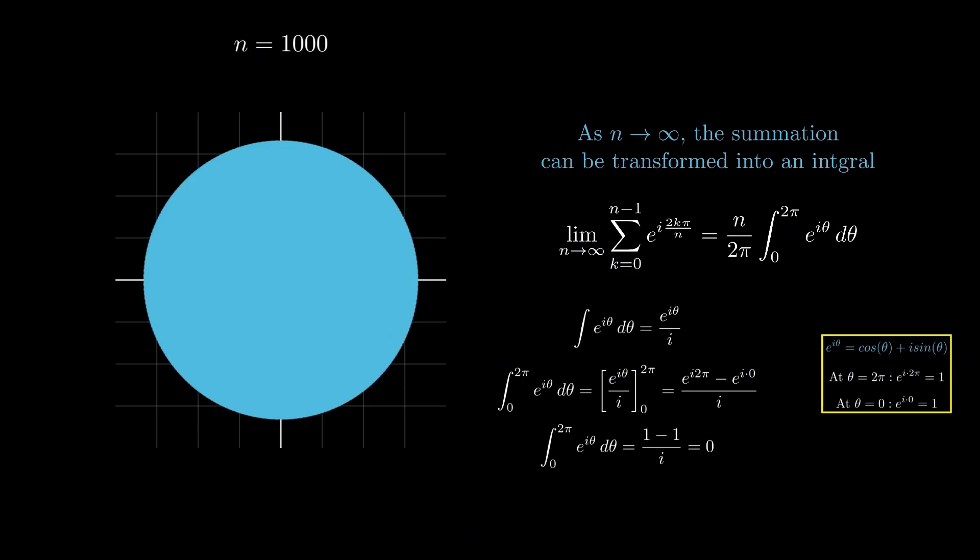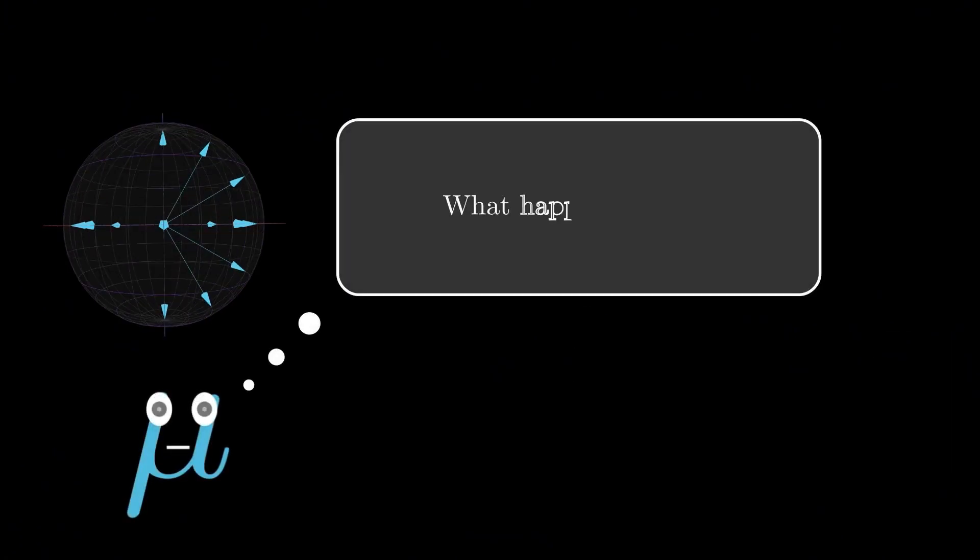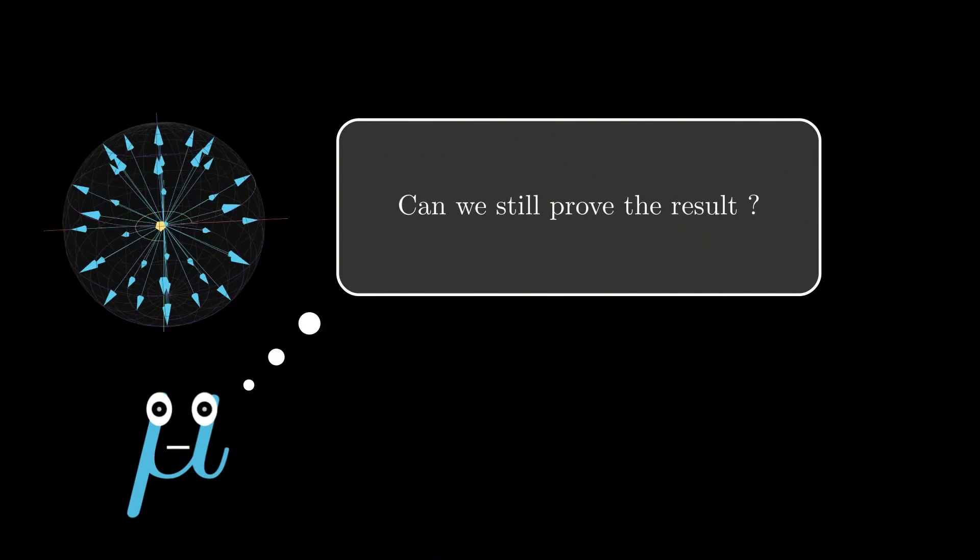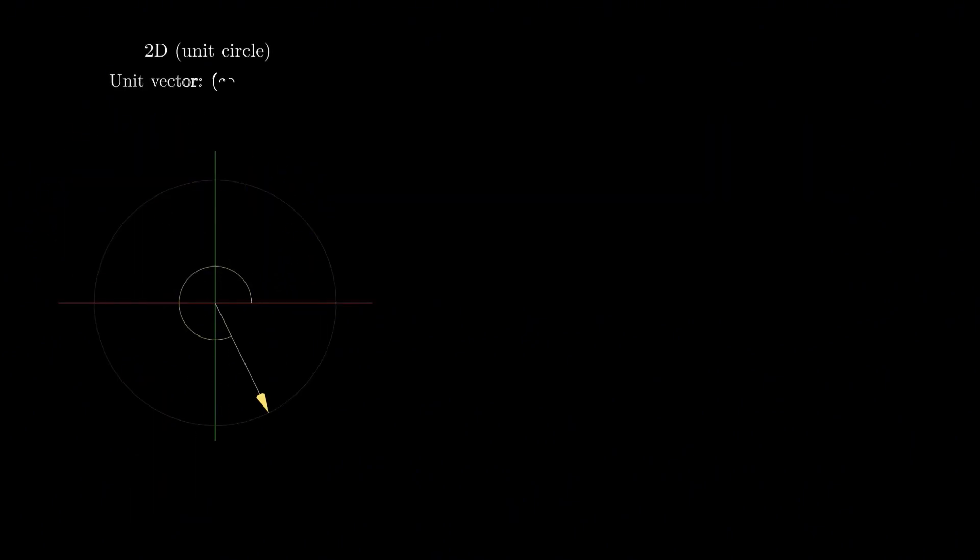That was all in two dimensions. This time I want to go deeper. What happens in three dimensions? Of course, such symmetry gives balance in three dimensions too, but can we still prove the result? In two dimensions, things are simple - we only deal with a single angle θ, and the coordinates of the vector on the unit circle are given by cos θ and sin θ. And as θ sweeps from 0 to 2π, the sum becomes...